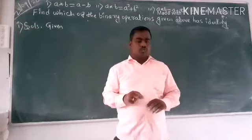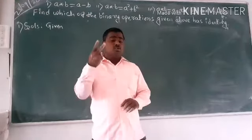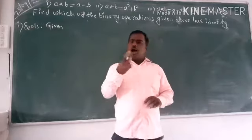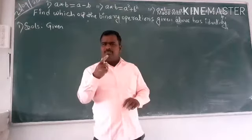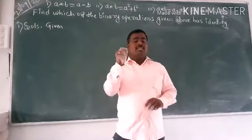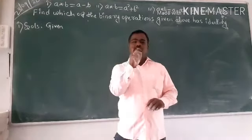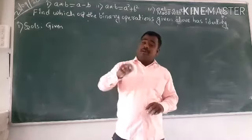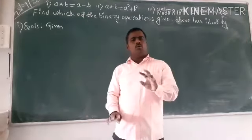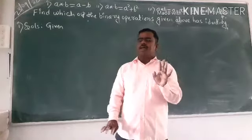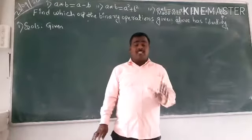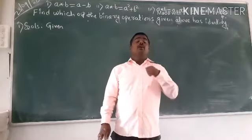Many times we are asking questions to find the identity element. I hope you know that identity means it exists for something. What is the identity of addition? Zero. What is the identity of multiplication? One. Zero and one are the two biggest identities for addition and multiplication.